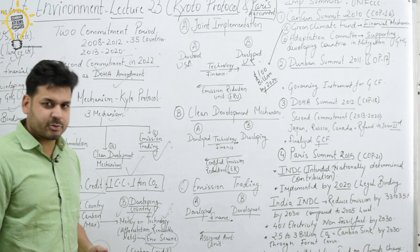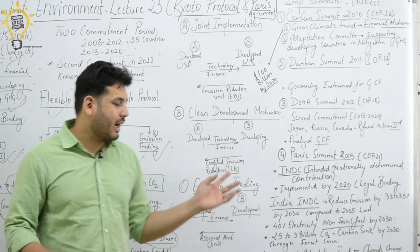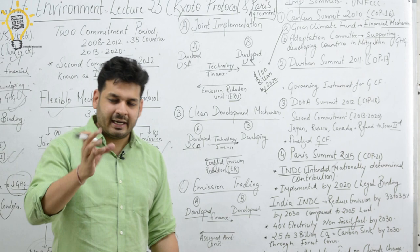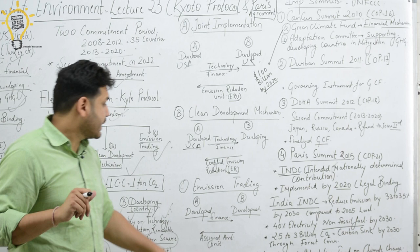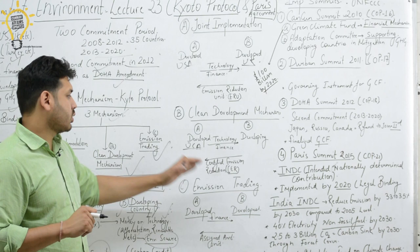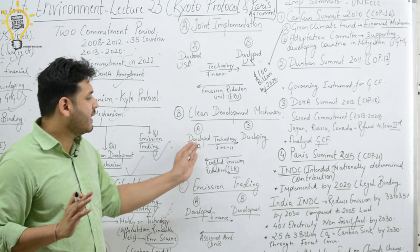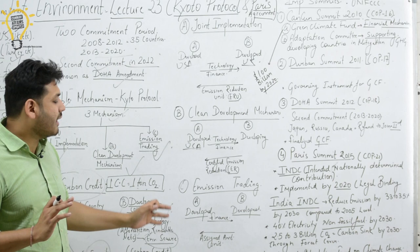The second mechanism is the Clean Development Mechanism (CDM), important from India's perspective. Here a developed country like the USA provides technology and finance to a developing country like India. In return, the developed country receives Certified Emission Reductions (CERs). CDM is between a developed country and a developing country.